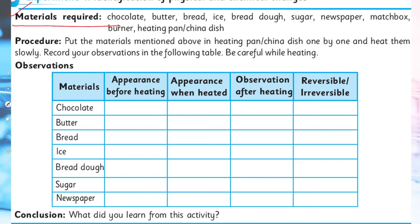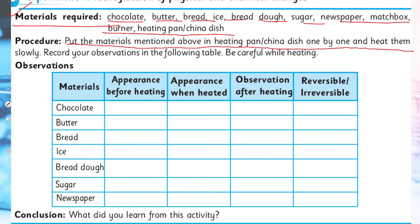Now you can perform this experiment at home by pausing the video. You will need: chocolate, butter, bread, ice, dough, sugar, newspaper, matchbox, burner, heat, pan, and a china dish. The procedure is: put the materials mentioned above in a heating pan one by one and heat them slowly, then record your observations in the following table. Be very careful while heating.